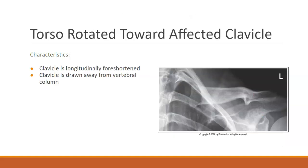When the torso is rotated toward the affected clavicle, the medial clavicular end will draw away from the vertebral column and the clavicle will be foreshortened in the resulting projection. You will have to rotate the patient back so that their mid-coronal plane is parallel with the IR.